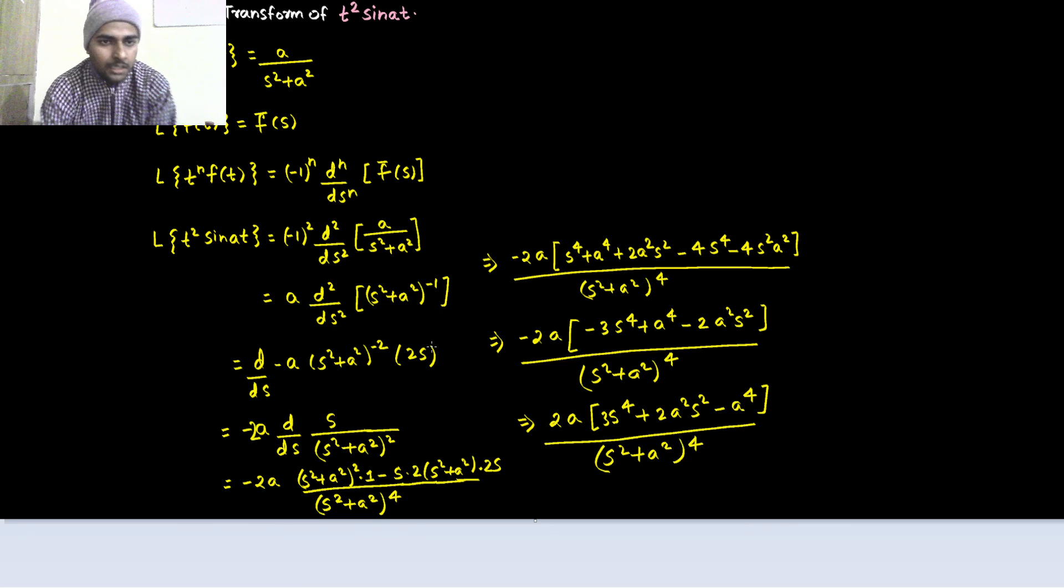So, again, whenever you multiply by t power n, you have to do minus 1 power n and the nth derivative of whatever Laplace transform you got for whatever you are multiplying with powers of t. That's how easy it is.